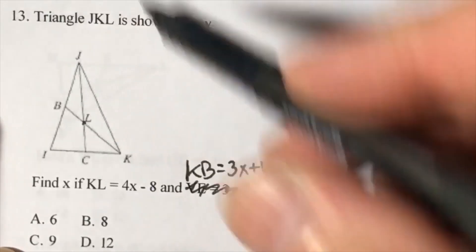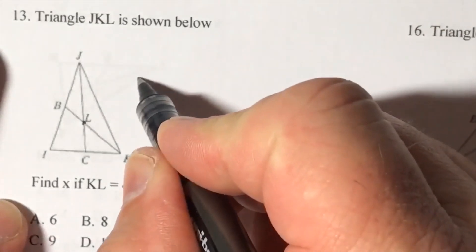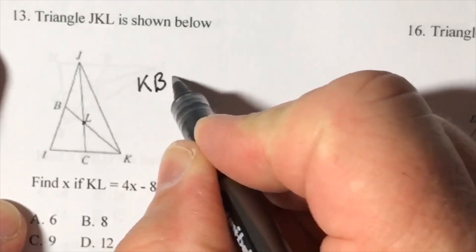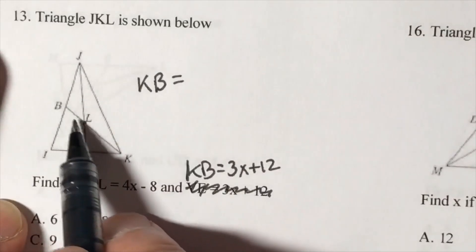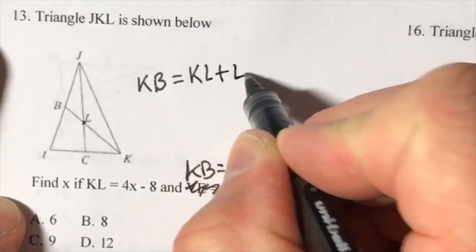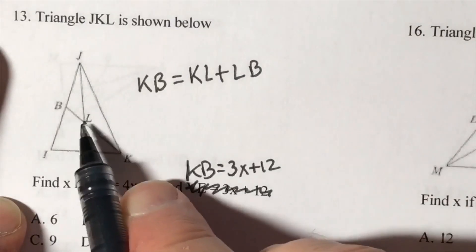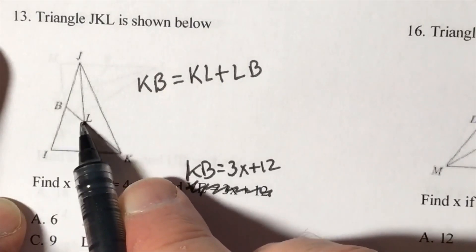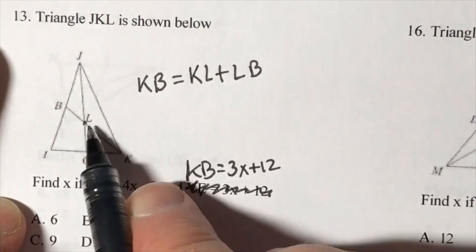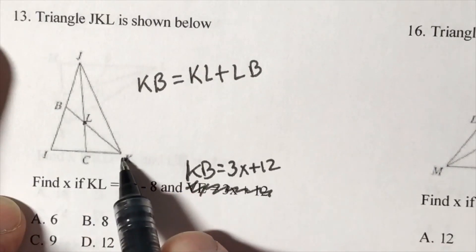We are given the entire length of the median KB. The median is set up like this: KB equals KL plus LB. KL is the larger part. BL is smaller than KL, and it is always half the length of KL.